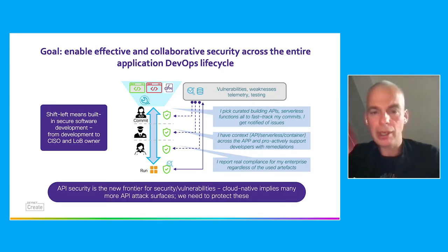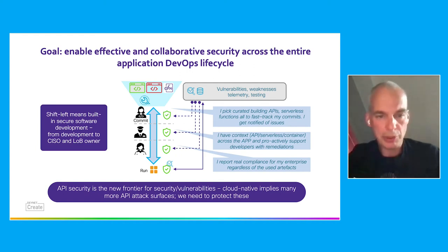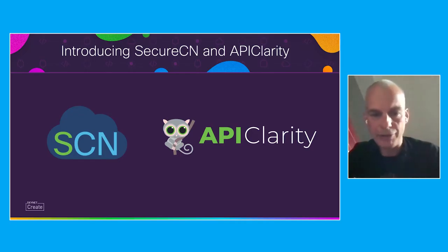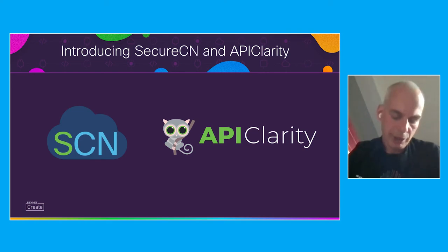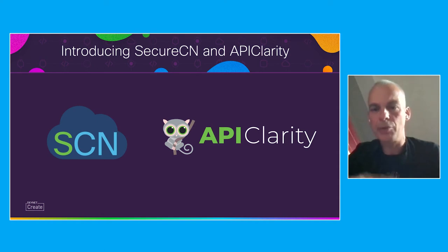API security, as I mentioned, is a key component of cloud native deployments — it's a new frontier for security and vulnerability testing. Cloud native really implies that many more API attack surfaces are available, and we need to protect those. That's what we're doing within SecureCN. To give that some deployment context, we're introducing SecureCN and API Clarity. SecureCN on the left is this entire package built around Istio and Envoy, allowing you to manage all applications hosted in a cloud native deployment for a Kubernetes environment.